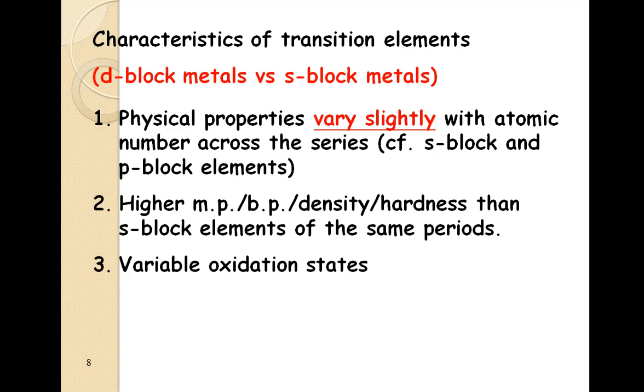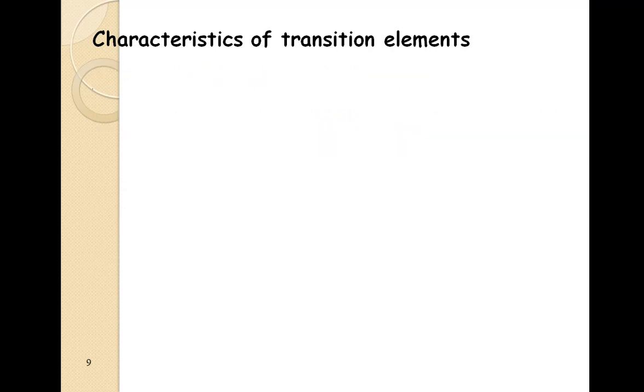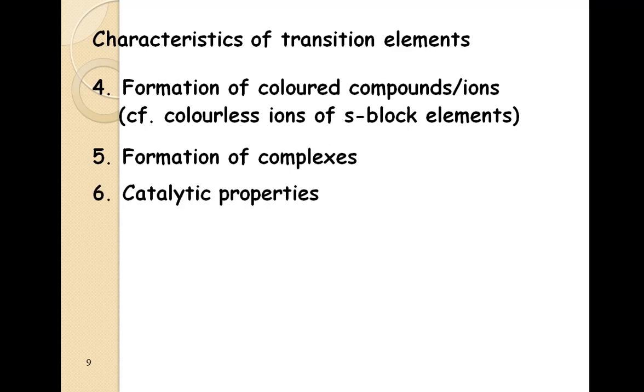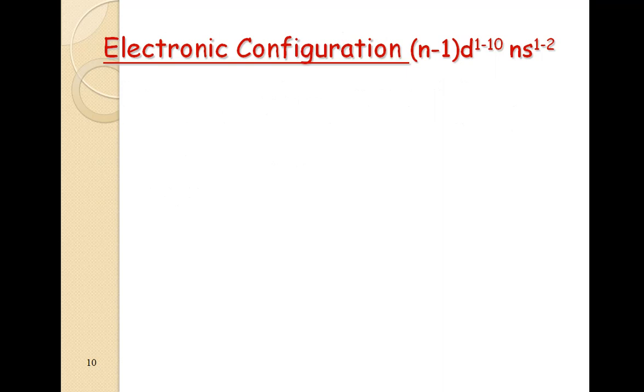D block metals show variable oxidation states, whereas in s block metals, you will find the oxidation state is fixed. D block elements form colored compounds or ions, whereas s block elements show colorless ions. D block elements form number of complexes. D block elements show catalytic properties. No such properties exist with s block or p block elements. We will take up all the properties one by one.